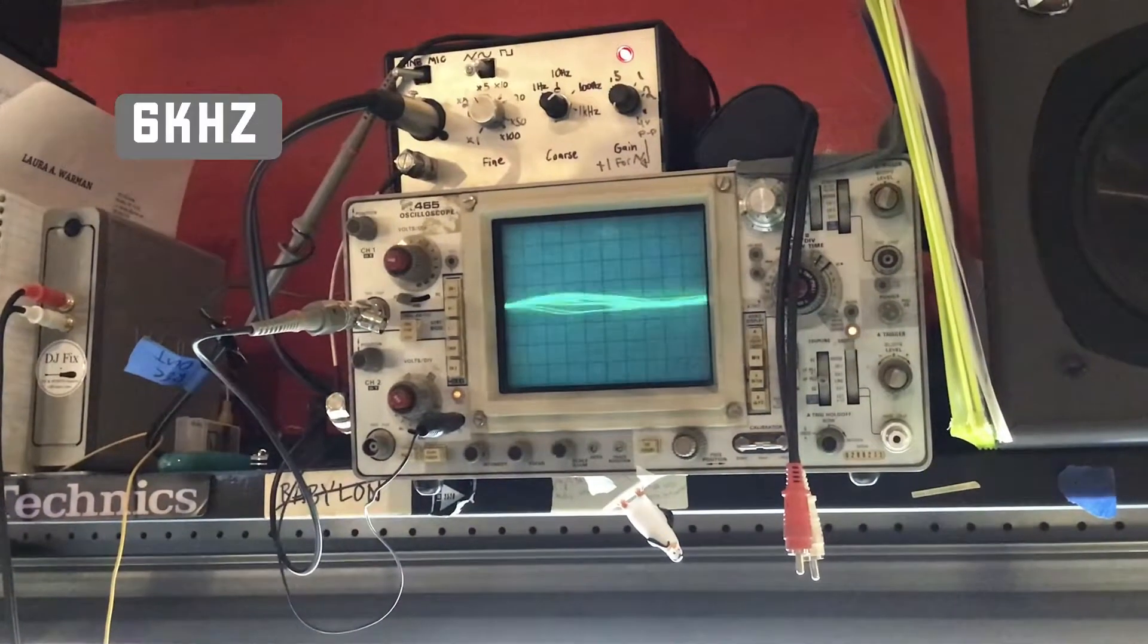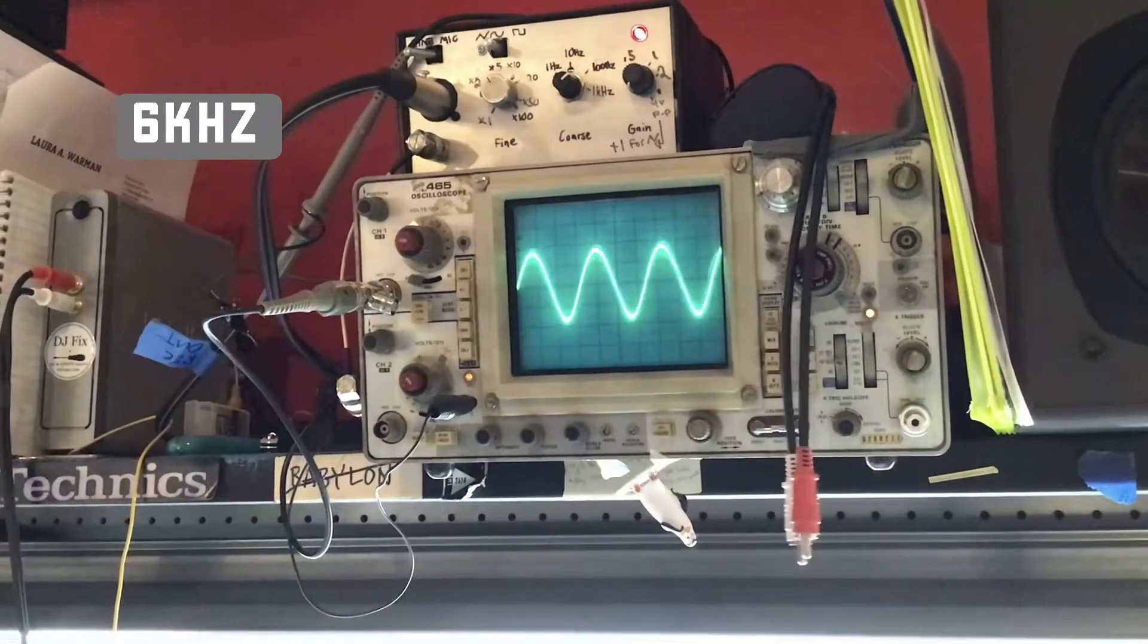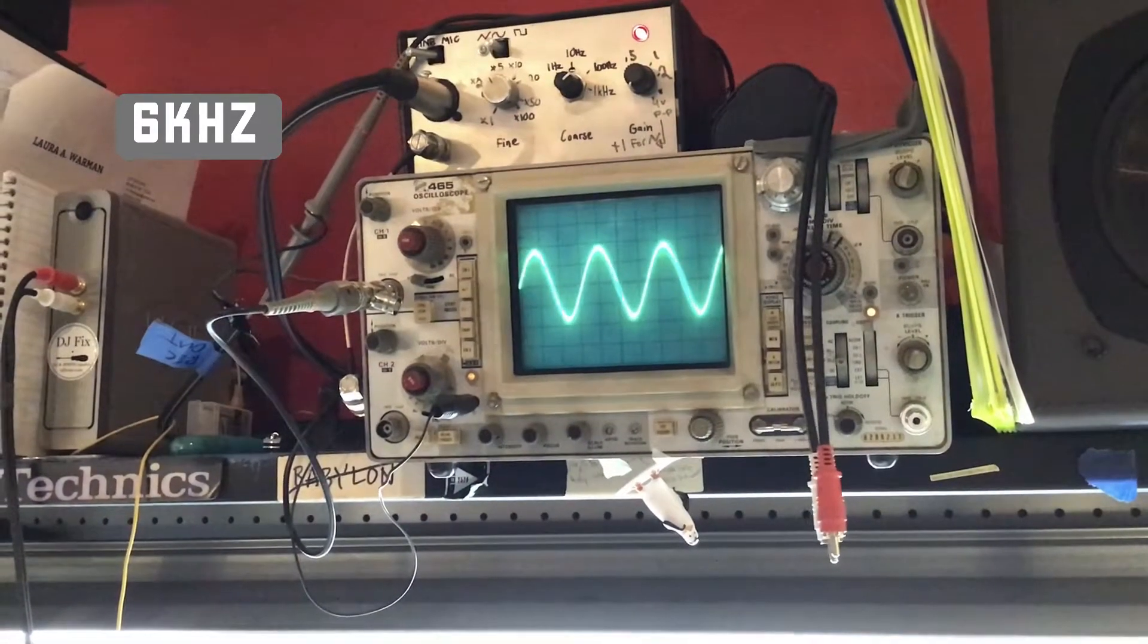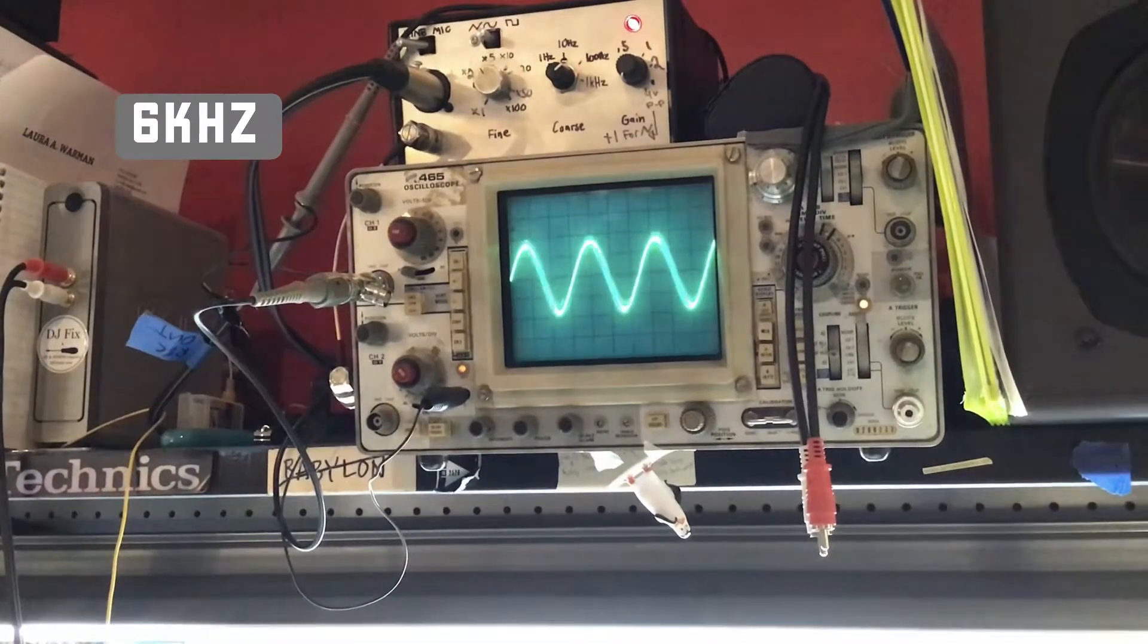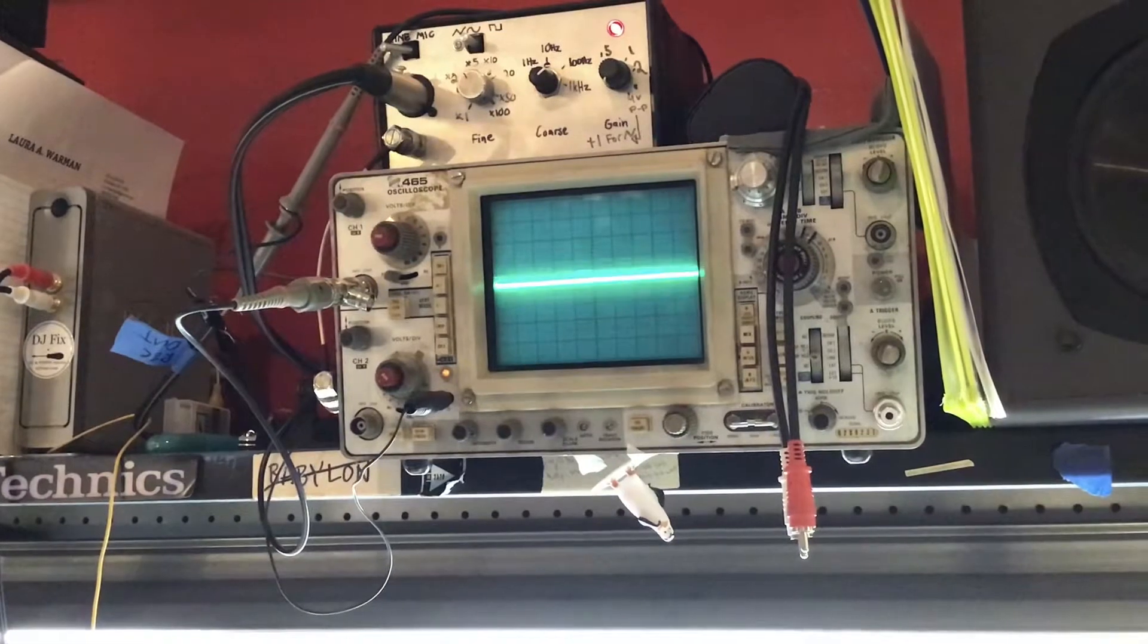6,000 cycles, 6k. Going into the area where you'll hear like the attack of drums and cymbals and stuff like that, and sibilance. Very even, nice.